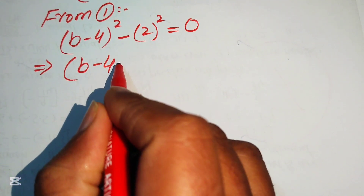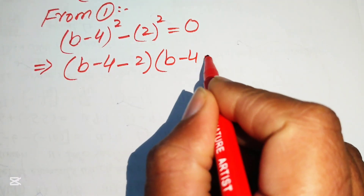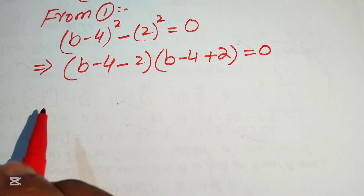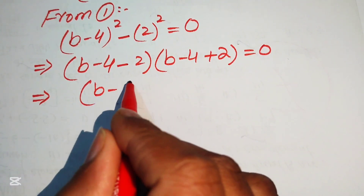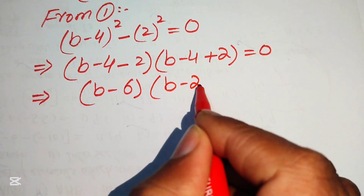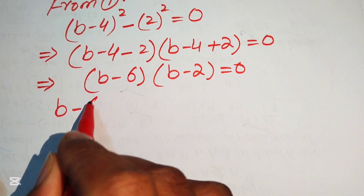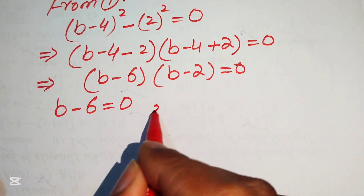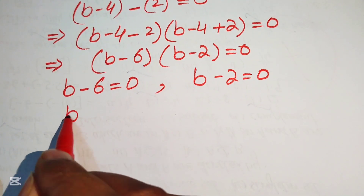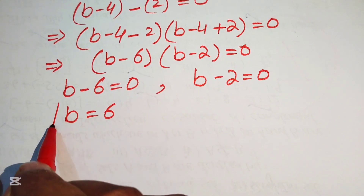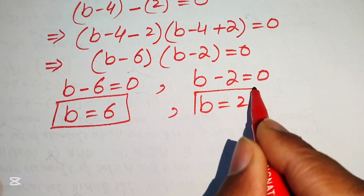Applying the identity gives us (b minus 4 minus 2) times (b minus 4 plus 2) equals 0, which simplifies to (b minus 6)(b minus 2) equals 0. So we get b equals 6 and b equals 2 as the two values from equation 1.